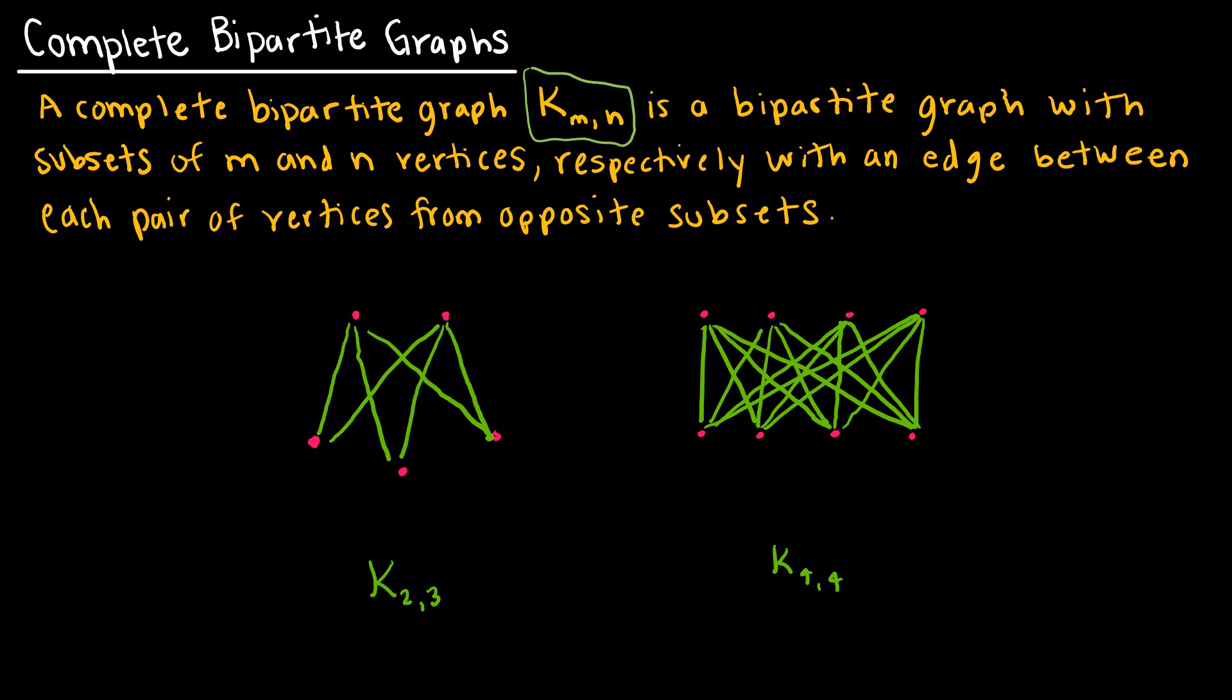This graph right here has a set of two and a set of three, which is why it's the complete graph K2,3. Notice all of the points in this set are connected to all of the points in the other set and vice versa. That's what makes it complete.